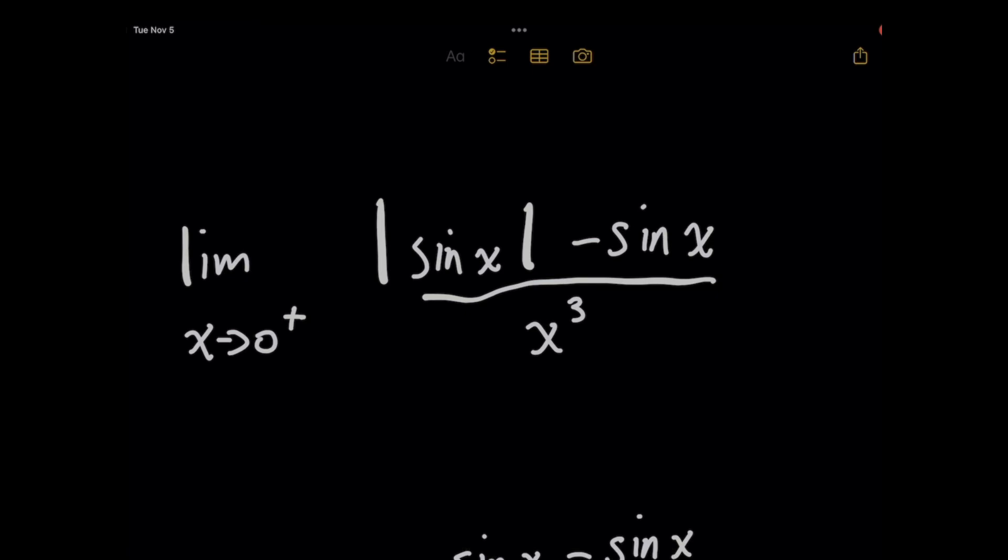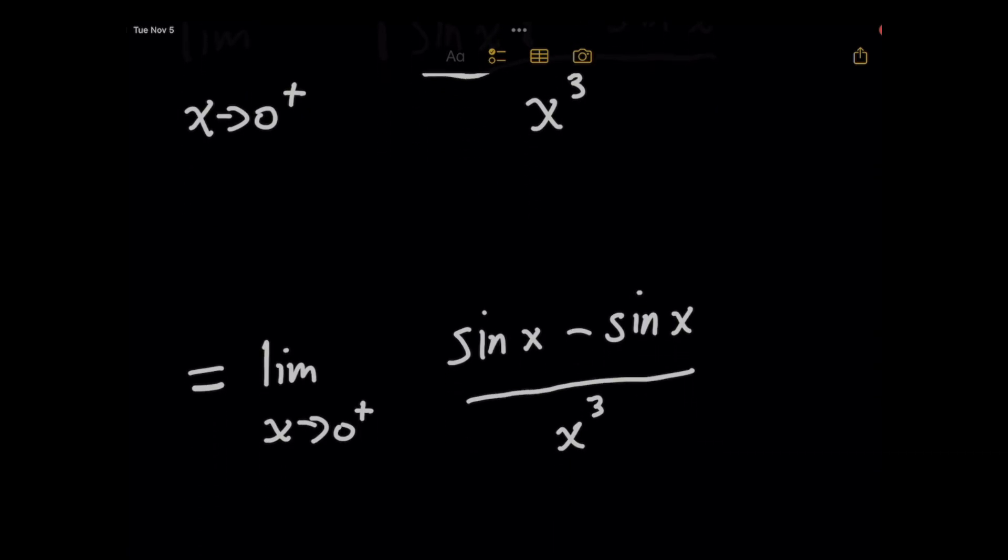So we can just drop the absolute value altogether, because just to the right of the origin, for very small and positive values of x, the sine of x already gives you an output that's positive. So I'm going to drop that here. And now we have sine of x minus sine of x on the top, which gives you zero as your limit.